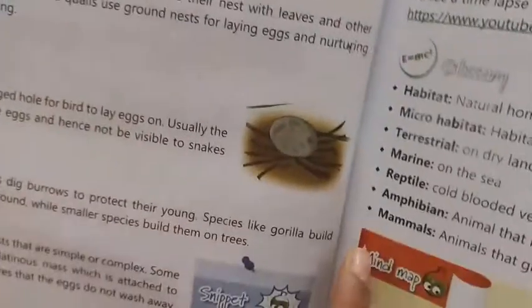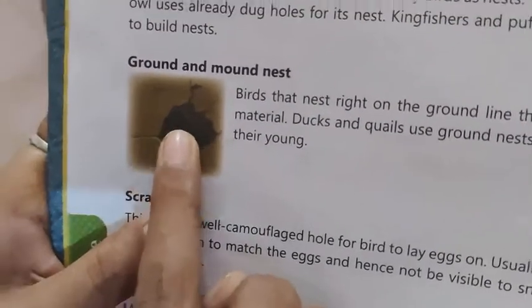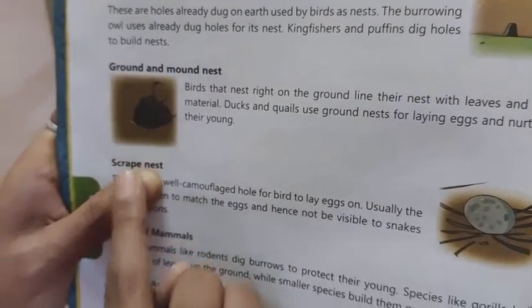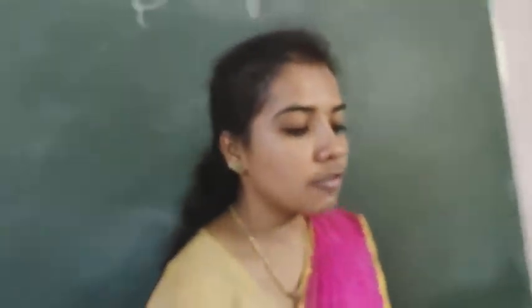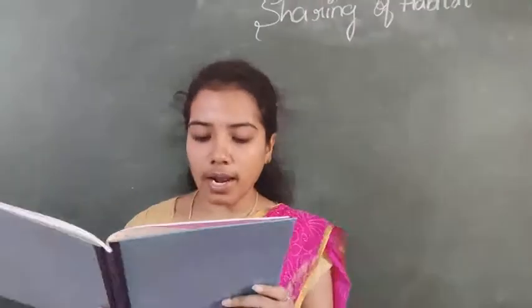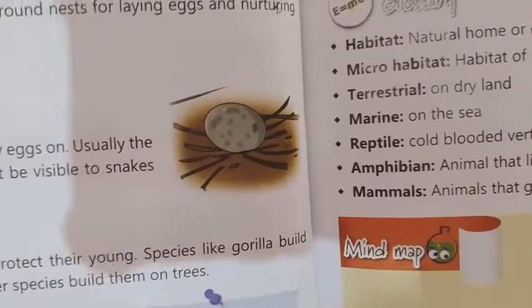Ground and mound nests sit right on the ground, lined with leaves and other materials. Ducks and quails use ground nests for laying eggs, which helps shelter the young ones. Scrap nests are just a shallow, well-camouflaged hole for a bird to lay eggs in — the site is chosen to match the eggs and hence is not visible to snakes and raccoons.